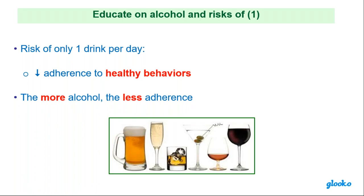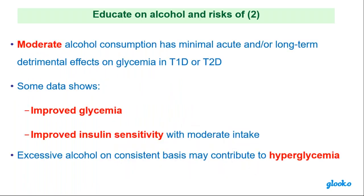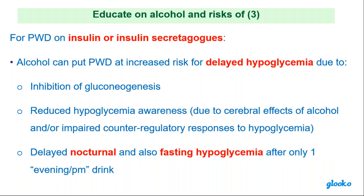What about alcohol? The risk of drinking only one drink a day is a decreased adherence to healthy diabetes behaviors — especially if you're sensitive to the effects of alcohol. The more alcohol, the less adherence. The research says that moderate alcohol consumption has minimal acute and long-term detrimental effects on glycemia. Some data also show improved glycemia and improved insulin sensitivity, but only with moderate intake.